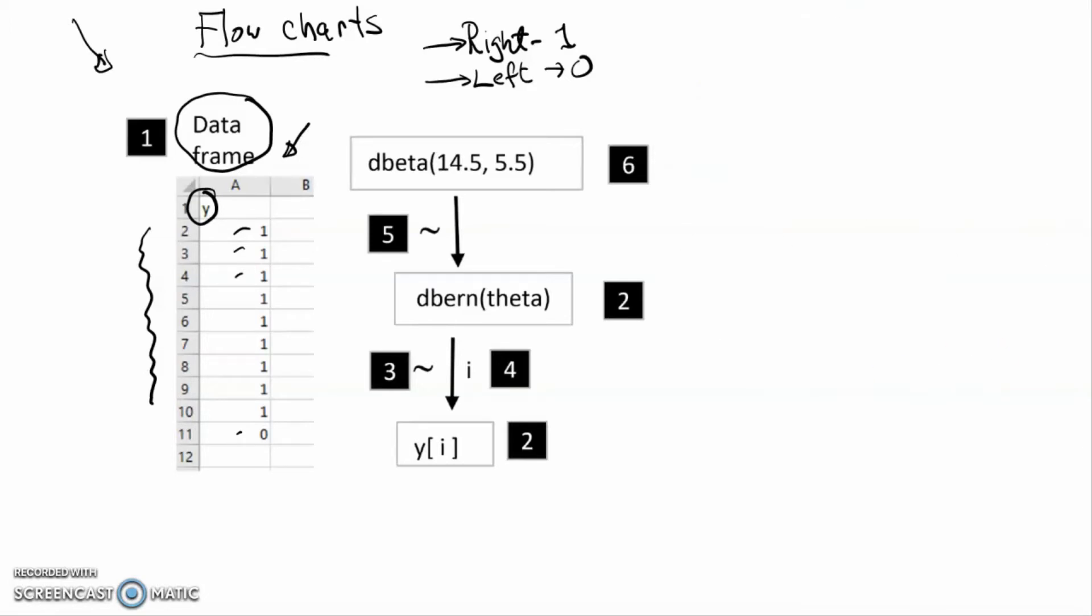Kruschke uses these flowcharts very effectively, and he recommends that we start at the bottom. So we're going to start here at the bottom with yi. It appears that y is indexed by i. So what does that mean?